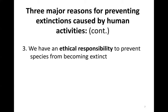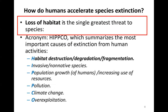The third major reason is an ethical responsibility we have to prevent species from becoming extinct. So how are humans accelerating the extinction of species? The main cause is loss of habitat — that is the single greatest threat to species. We have the acronym HIPPCO, which summarizes the most important causes of extinction from human activities.